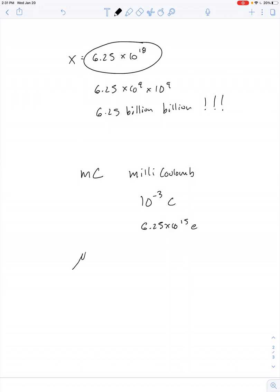You might even see the Greek letter mu in front of the C for microcoulombs. So this would be 10 to the negative 6th coulombs, or in other words, 6.25 times 10 to the 12th electrons, and on and on we go.